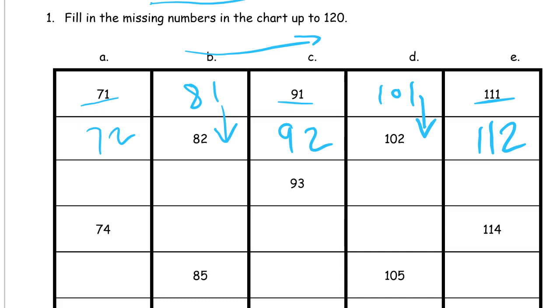And here we would have if this is 72 then this one here has to be 73. And this here has to be 83. And you'll notice that there are patterns to this chart even though it's not like a normal number grid. There are patterns to it.